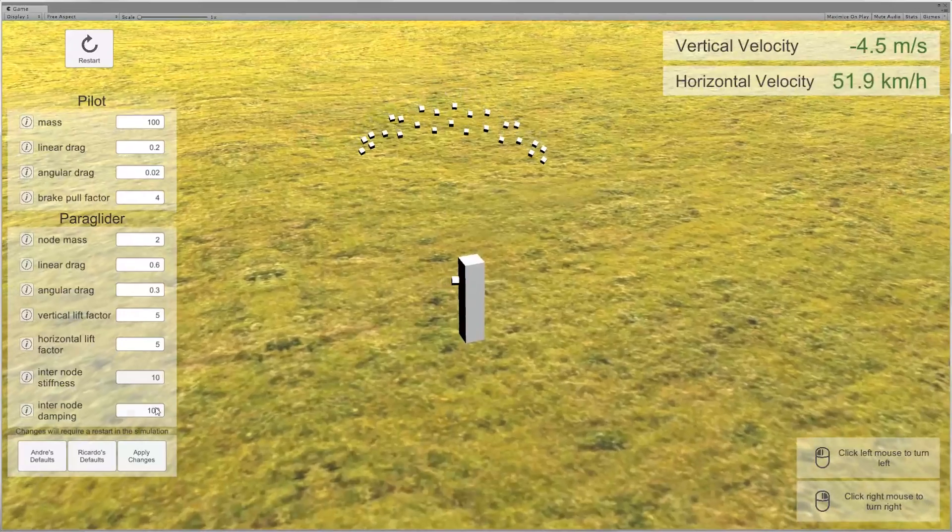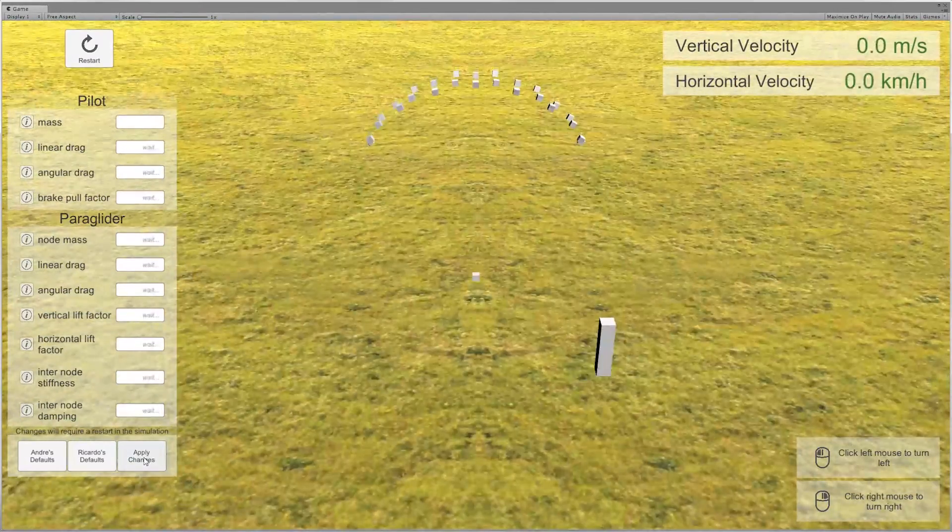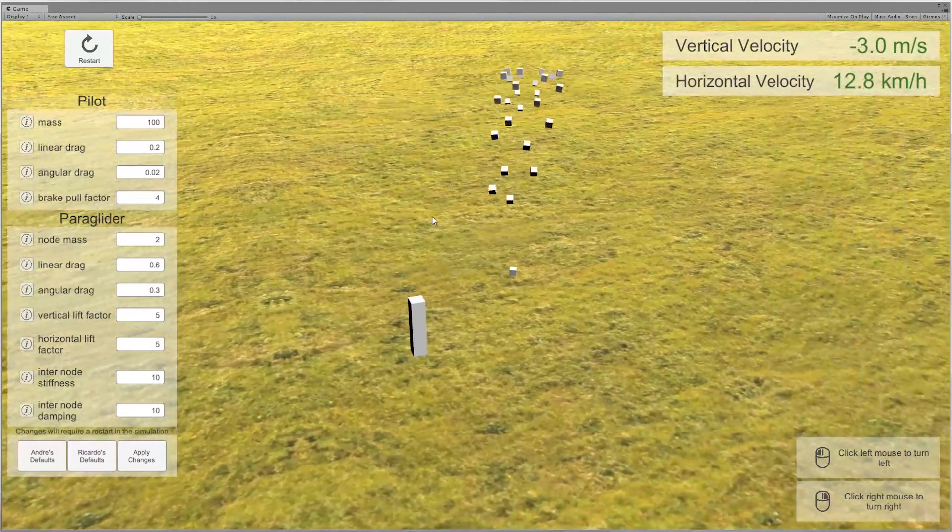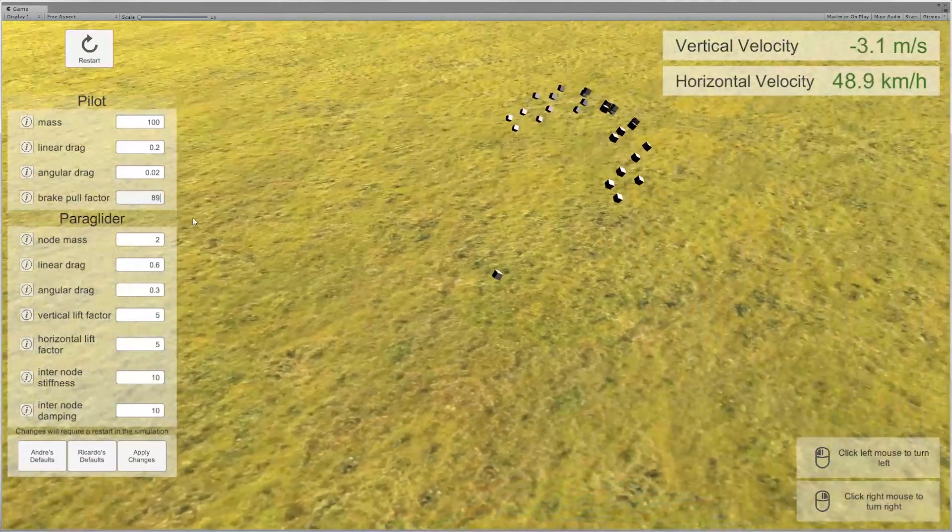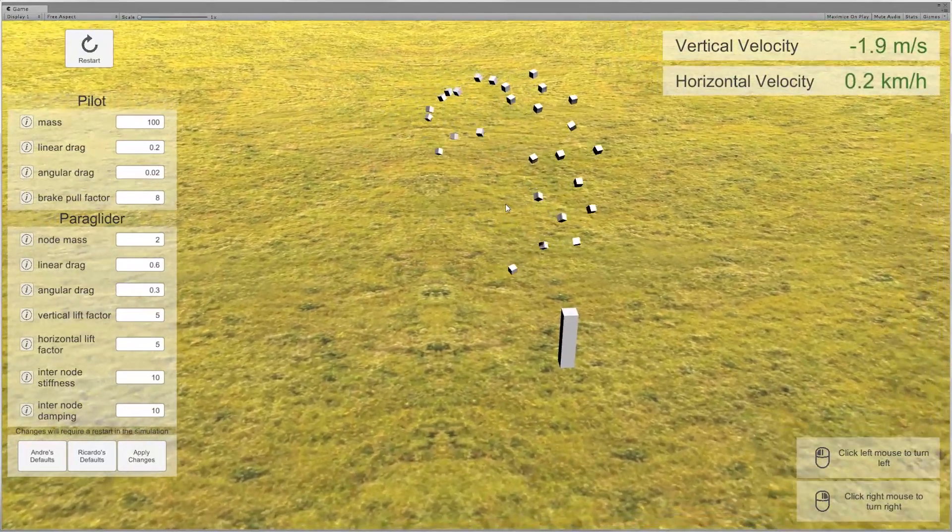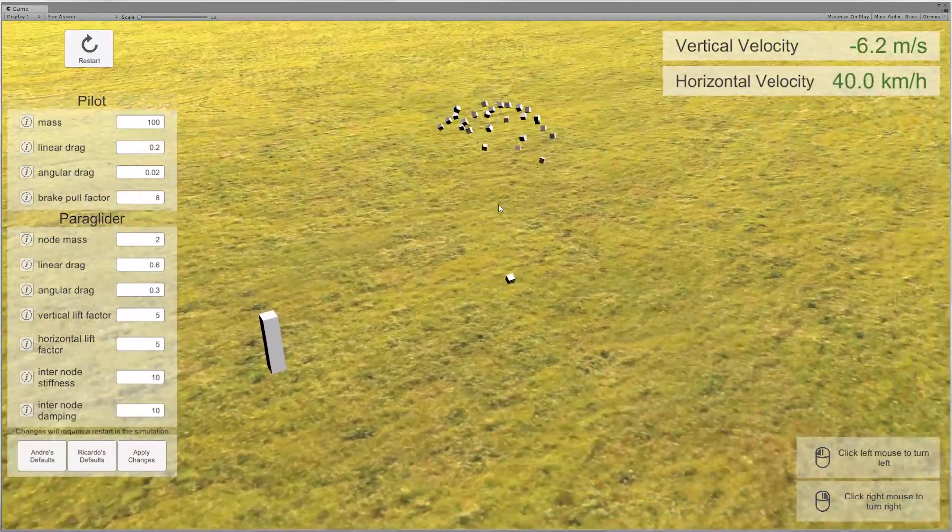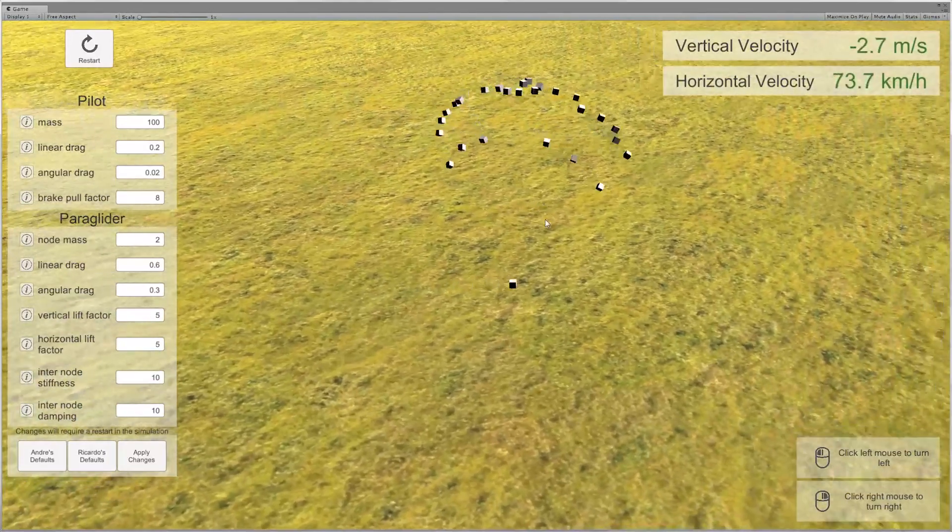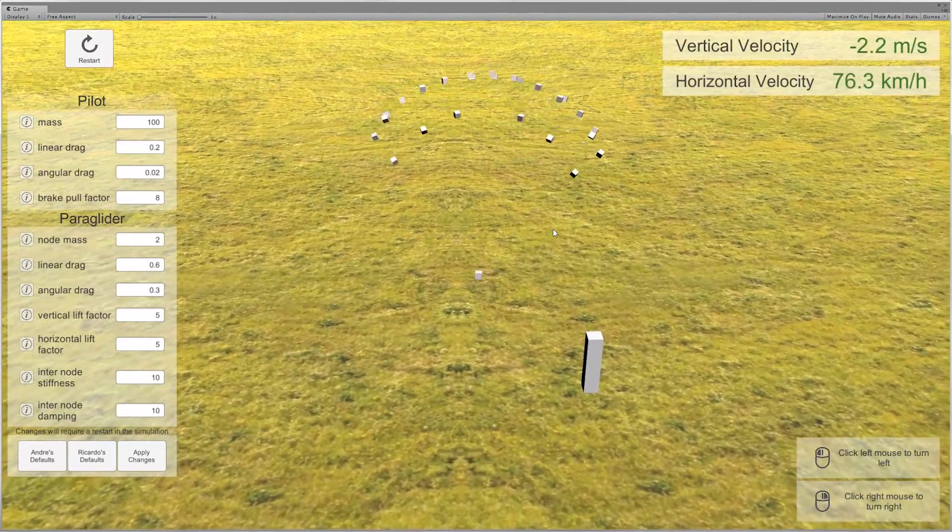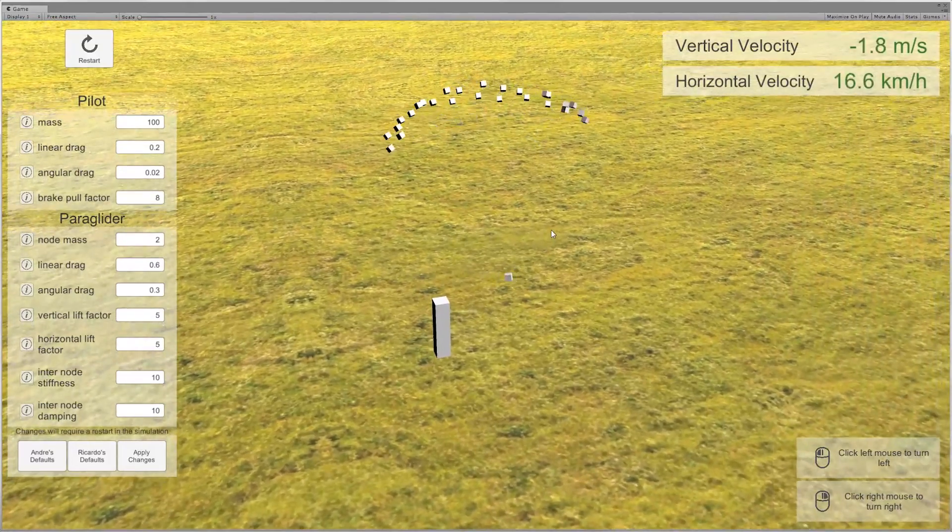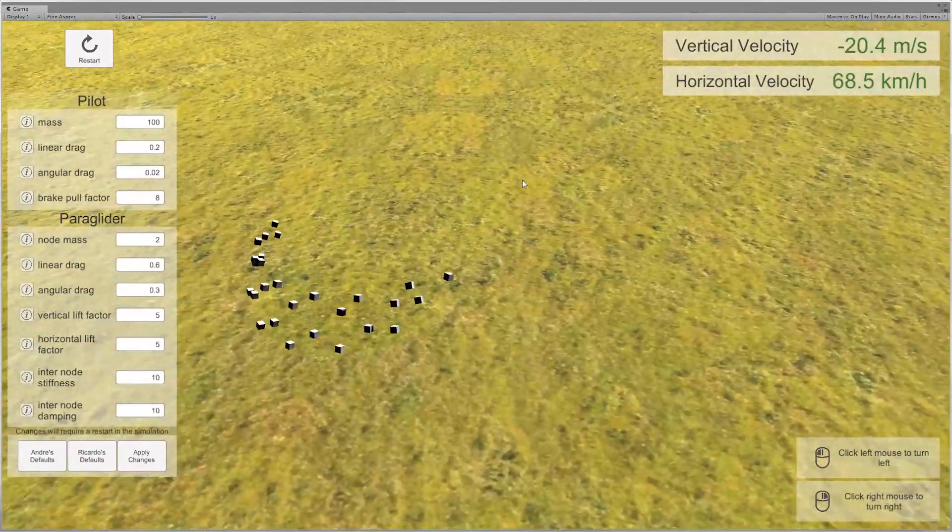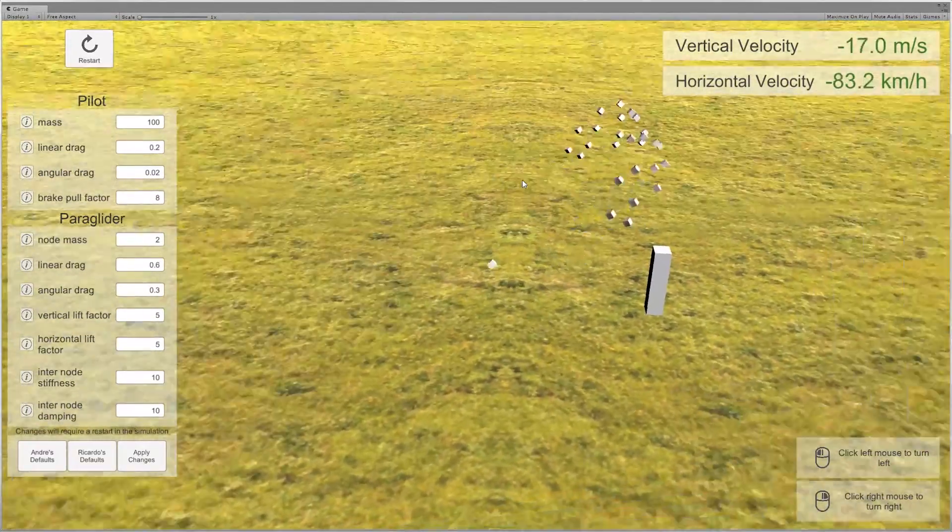So you can change your own values and try things for yourself. For instance the inter node stiffness and damping is the strength between each one of the paraglider nodes. Click apply changes and now you can see that when I pull the brakes there's a lot more deformation on the wing there. And if I change the brake pull factor and pull even more, now I can do proper horseshoe stalls and get into a really big mess. It's just a sandbox. It's interesting to explore these things and try different settings and see what the result is.